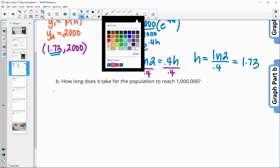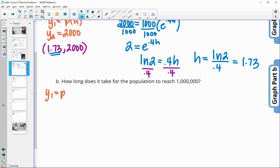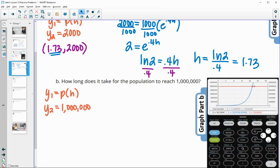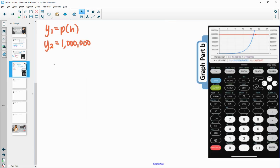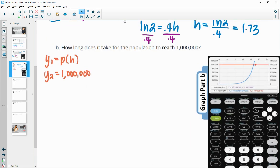So for the graphing purposes, you could leave your P of H in your Y equals, the equation that we've been using. And then in Y2, this time you would put in 1,000,000 and see where those two functions intersect. And so we can see that here. And so in this case, I had gotten an intersection of 17.27, which equals the 1,000,000 or gives us a Y value of 1,000,000. So after 17 and a quarter hours is when the bacteria is going to reach 1,000,000.